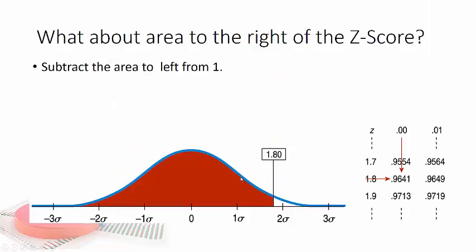So what if we want the area to the right of the z-score? Well, since the total area is one, we just subtract. So we go one minus 0.9641, and we would get 0.0359 or 3.59%.